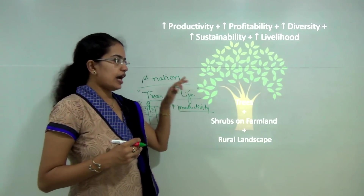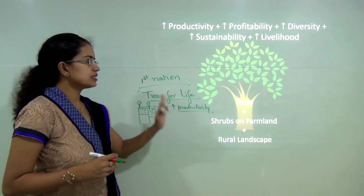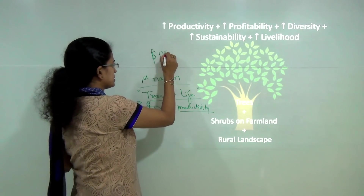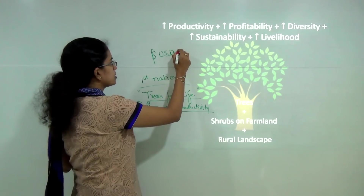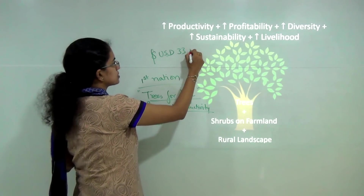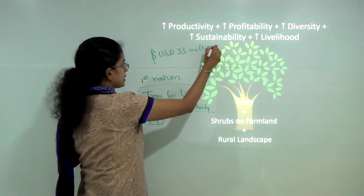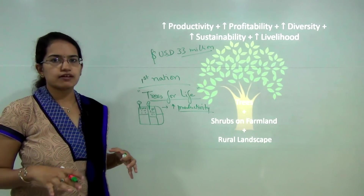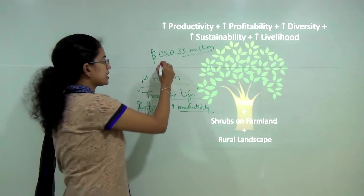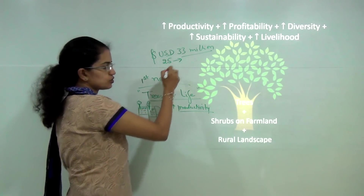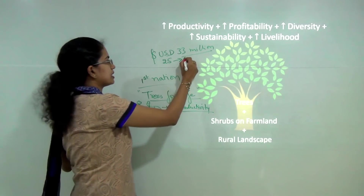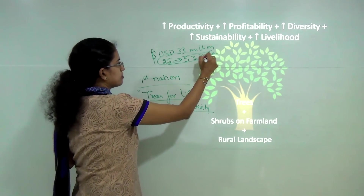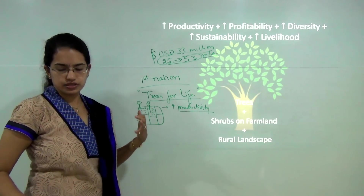The main idea was to establish a National Agroforestry Board. The cost of this project was estimated at around USD 33 million. Another key objective was to increase the area under agroforestry from the present 25 million hectares to nearly 53 million hectares. These were the main targets that worked around the policy-making.